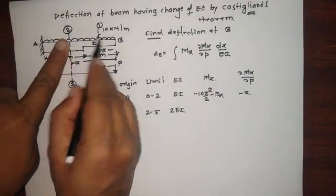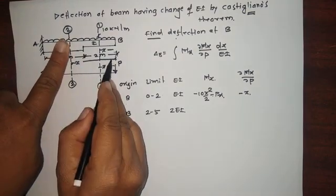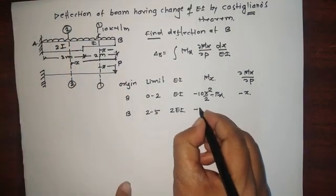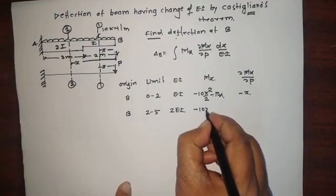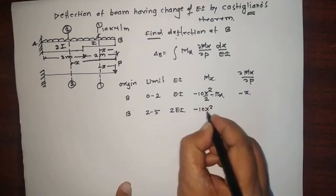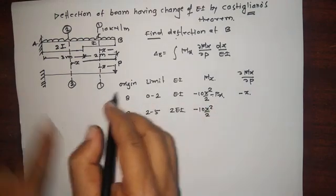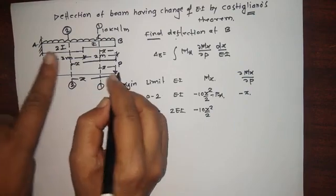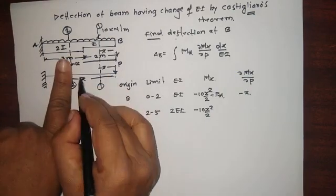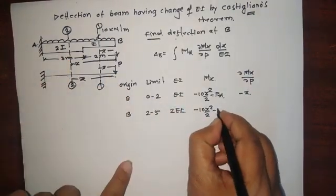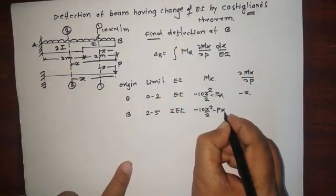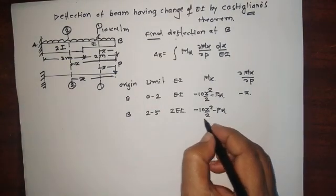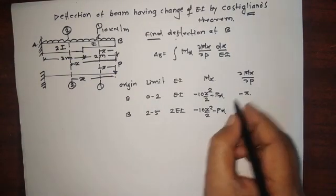For Section 2, the bending moment is 10 times x times x divided by 2, giving minus 10x squared by 2, that is minus 5x². The bending moment for the fictitious load is again minus Px. The derivative of this with respect to P is again minus x.